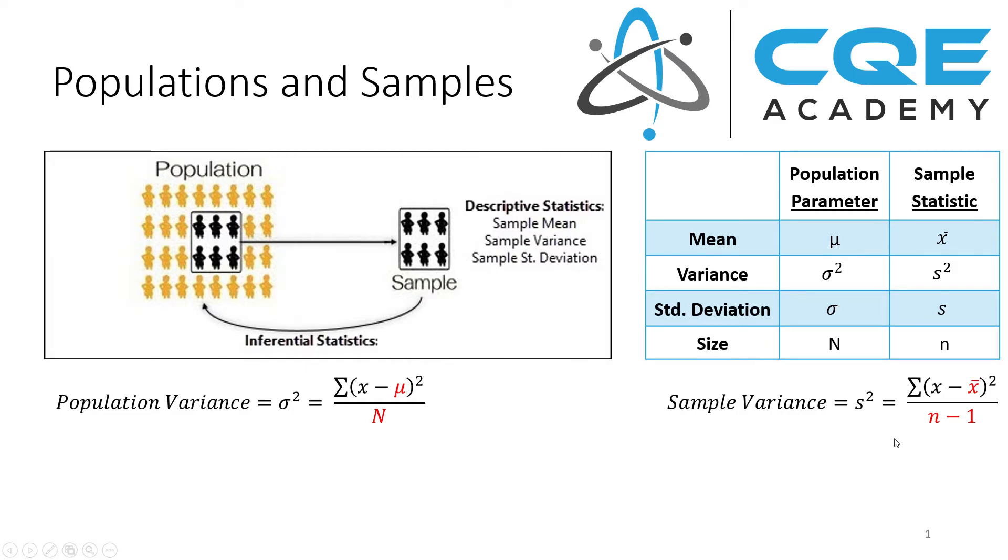When we move from the population variance to the sample variance, the equation changes slightly. We're still taking our individual values and comparing them against our sample mean, or x bar, but then on the bottom half of the equation, instead of dividing by the population size, big N, we're now dividing by the sample size, n minus 1.